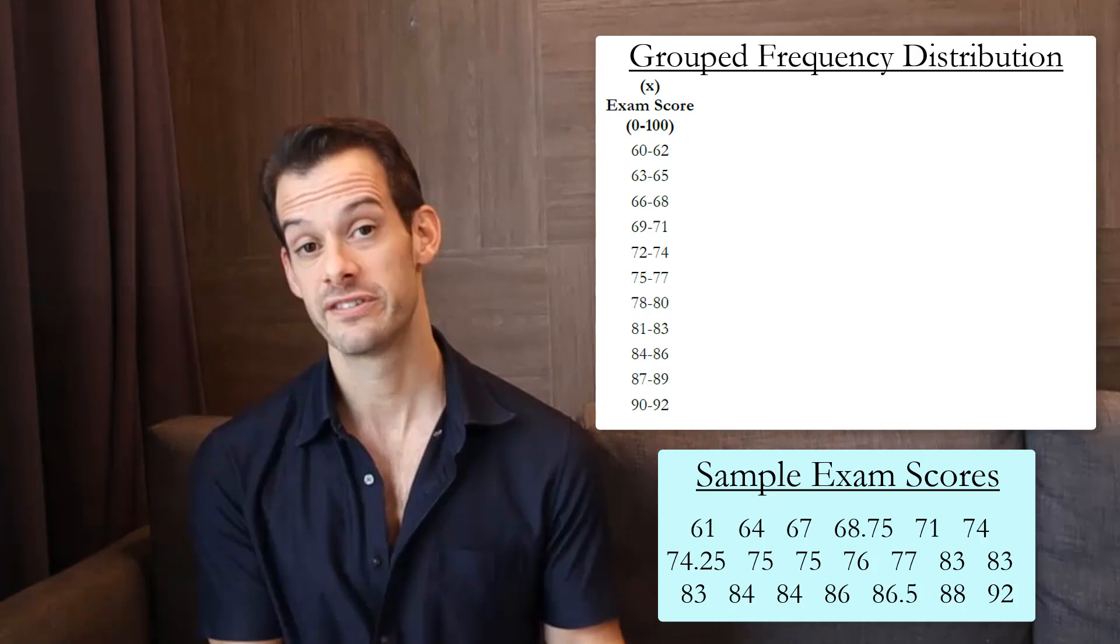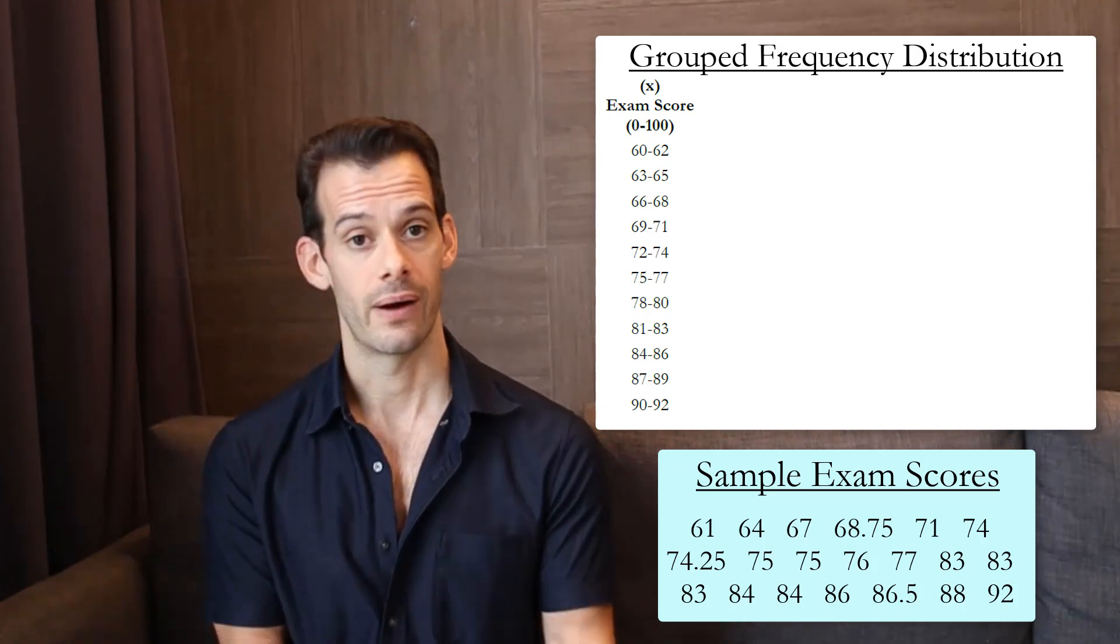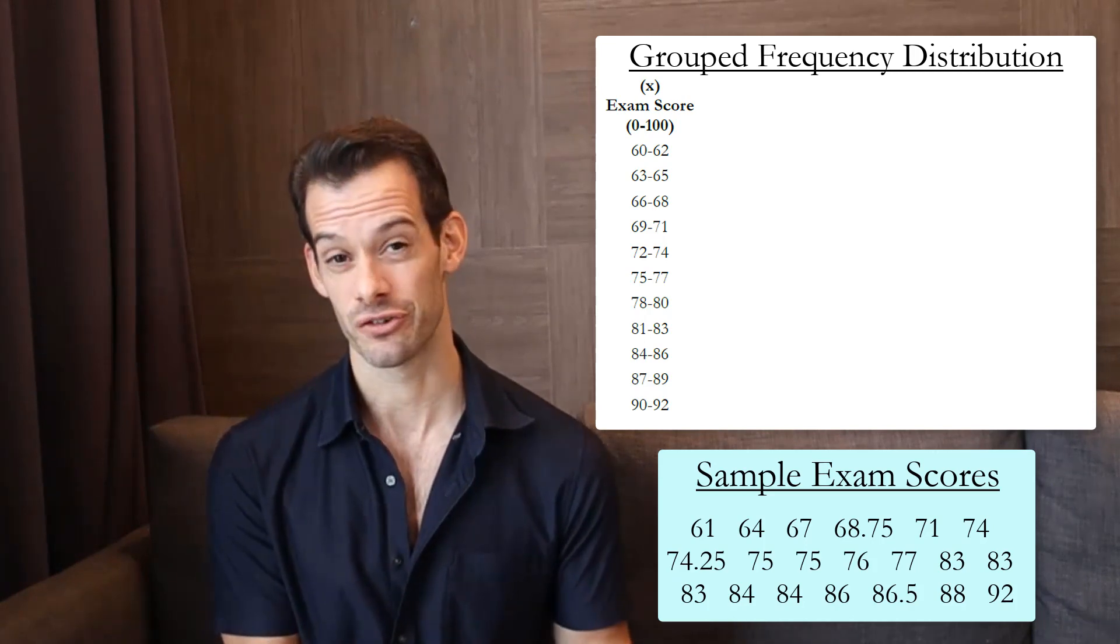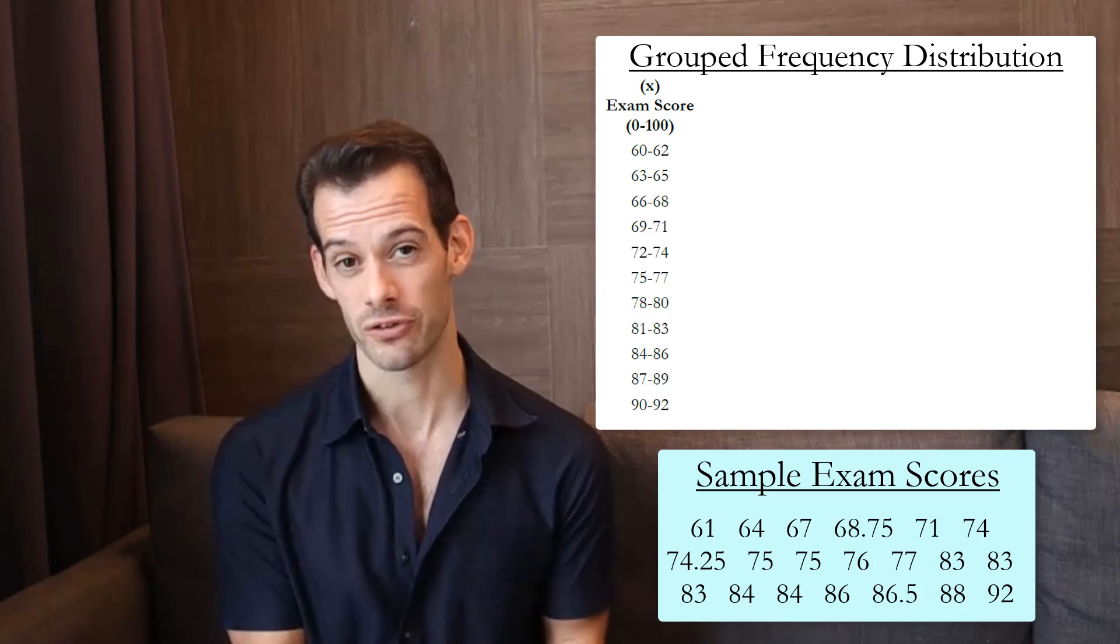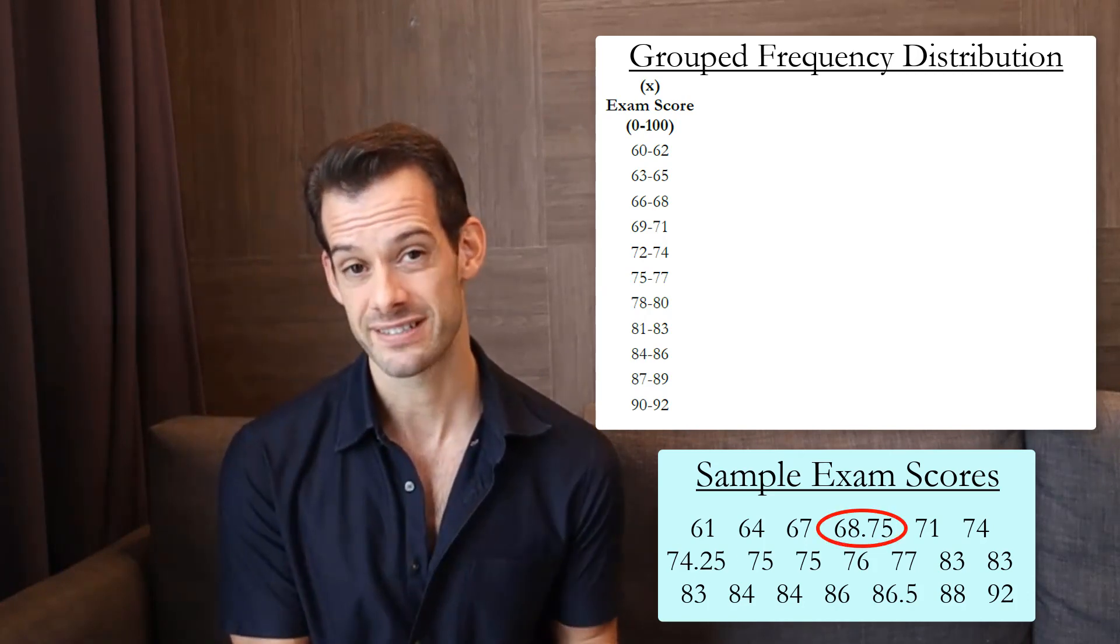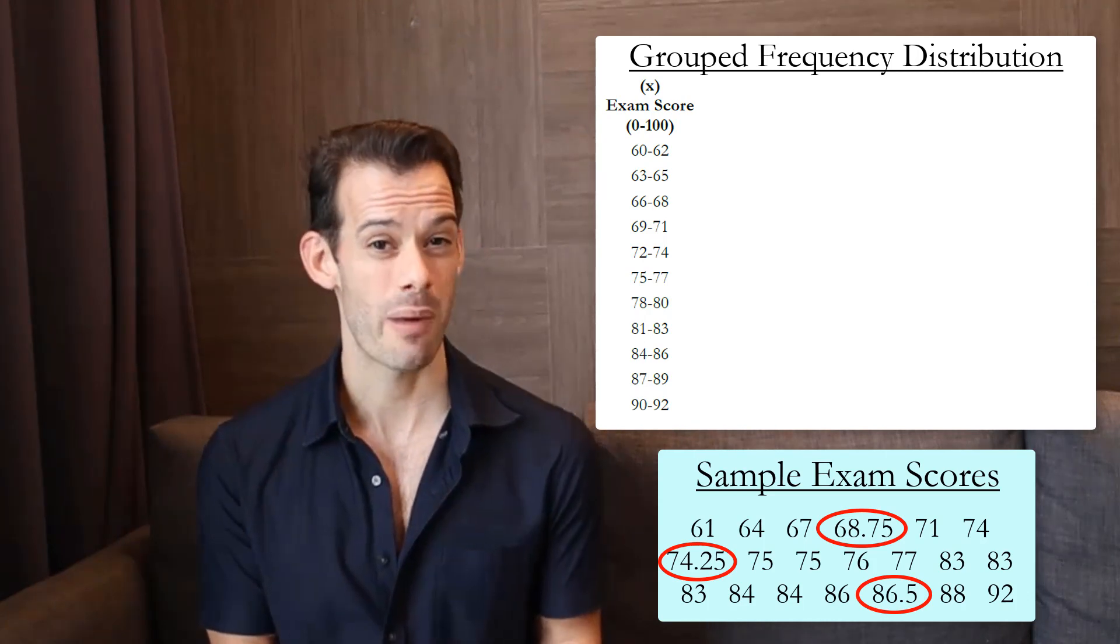Now we can count the frequency of scores that fall in each interval to create the frequency column. Now as we do this, you might realize that I've included some fractional scores here. So we have some scores that seem to fall between some of our intervals. We have scores like 68.75 or 74.25. So how do we go about handling these?